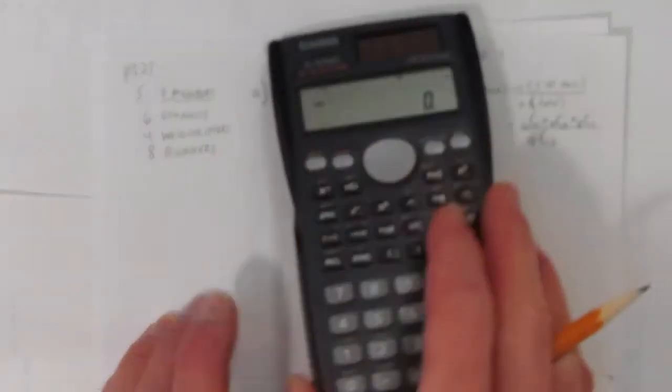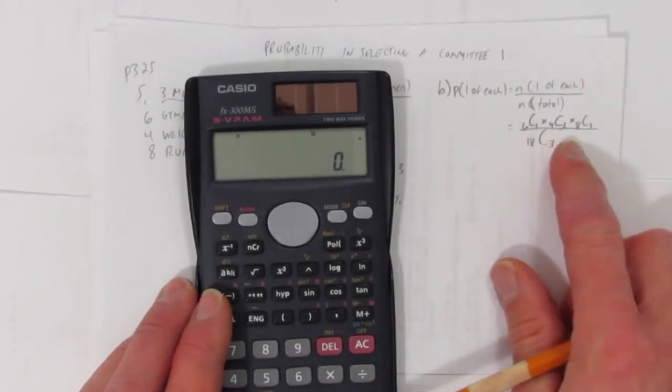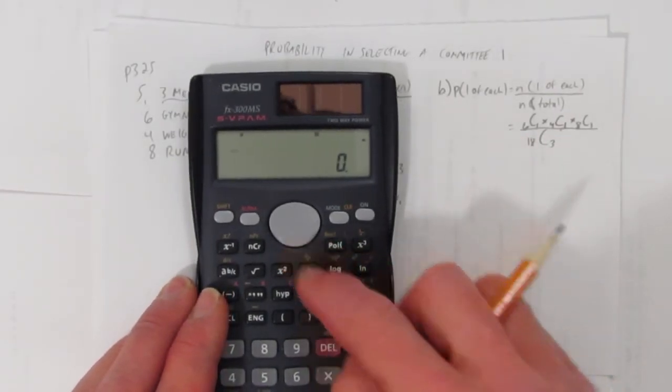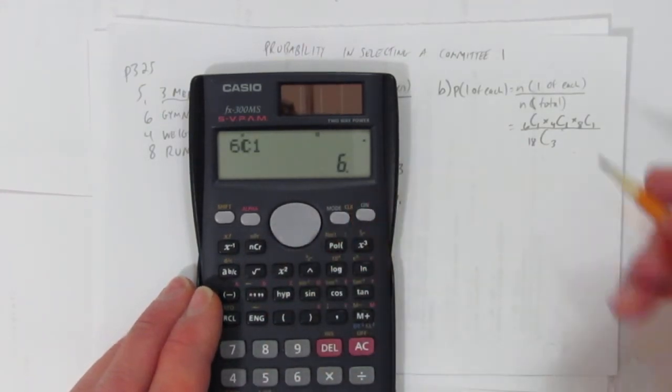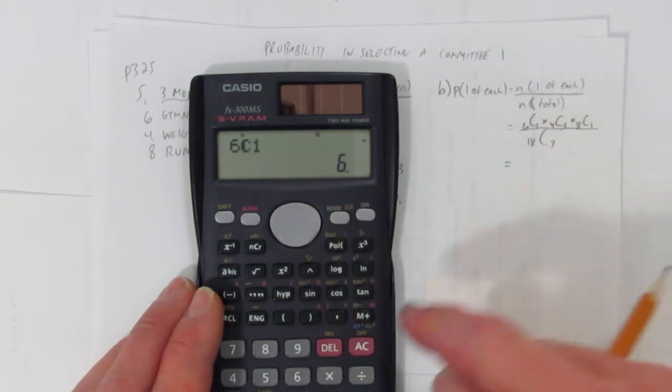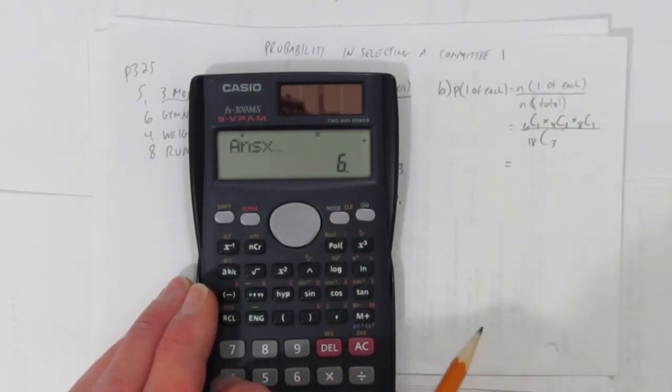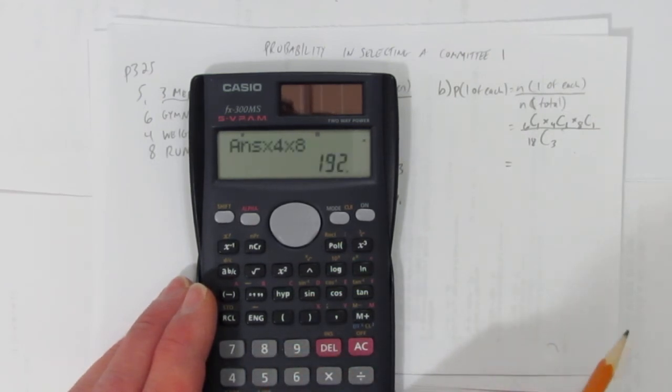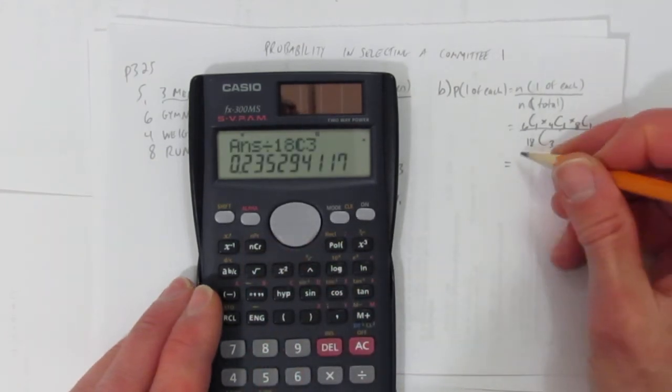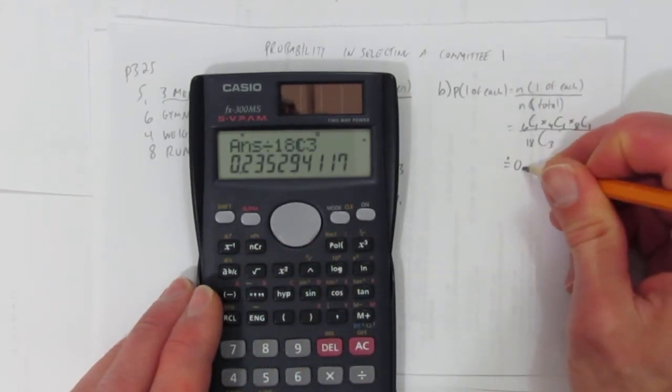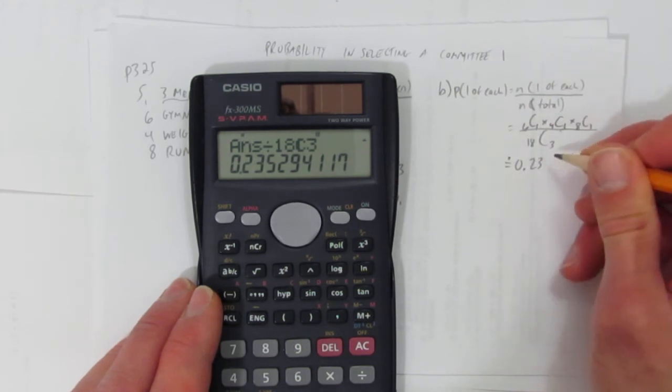Well, now I just have to calculate that. It's easy, though. Six choose one, four choose one, eight choose one, all the same pattern. In case you don't know, you can check it out. Six choose one is just going to be six. And so, I can do it all in my calculator at once. But I also know six choose one is six. So, I can just times it by four choose one, which is just four, times eight choose one, which is just eight. And divide all that by 18 choose three. And I get approximately 0.23529.